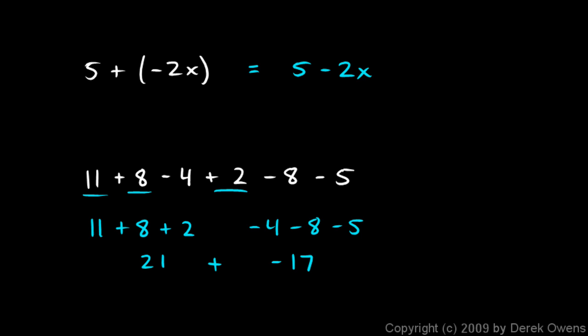So 21 plus negative 17 ends up being 4, because 21 minus 17 is 4. Adding a negative number is the same as subtracting that number.